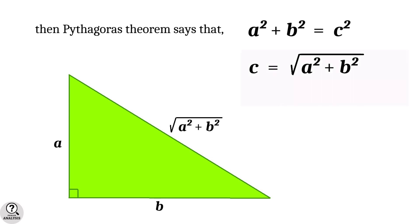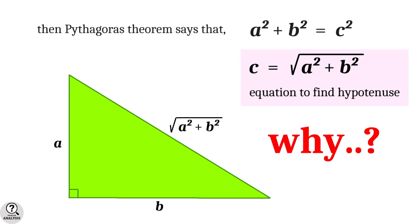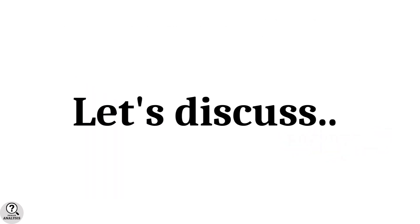That is, the Pythagoras theorem actually provides an equation to find the hypotenuse. But my question is, why? Why is this true for any right triangle?